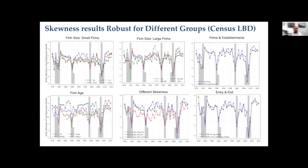On robustness: looking across firm sizes — small firms versus big firms — firms versus establishments, allowing entry and exit of firms, different measures of skewness, different ages of firms — you get the same pattern throughout.